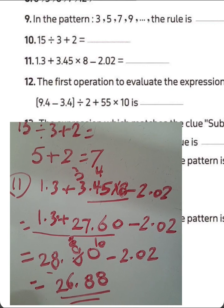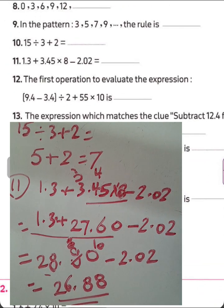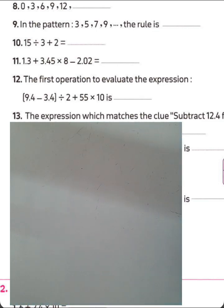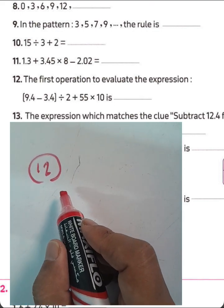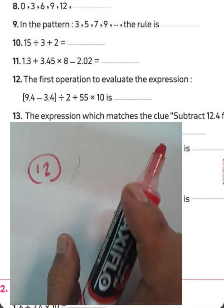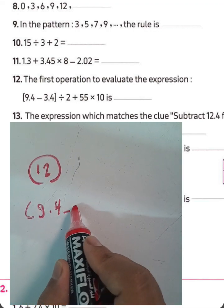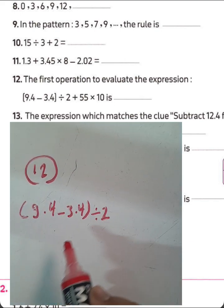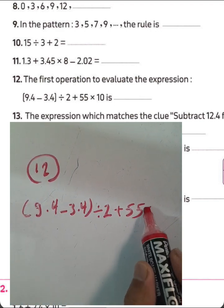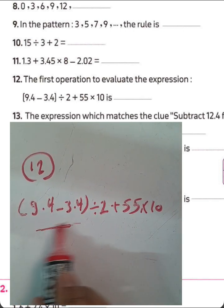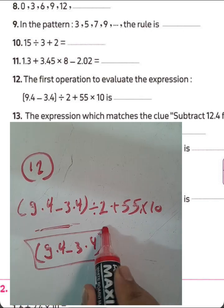Question number 12. We find parentheses first. We have 9.4 subtract 3.4 divided by 2 plus 55 times 10. Parentheses first — the first operation is to find the result of 9.4 subtract 3.4. Write this operation in the space.